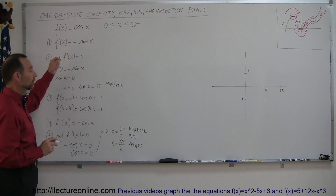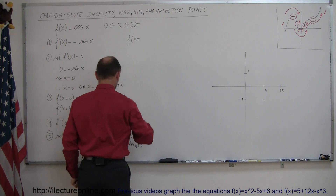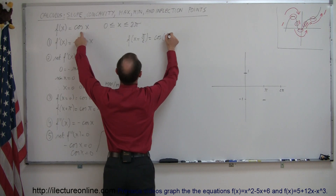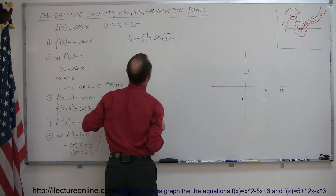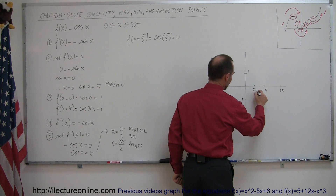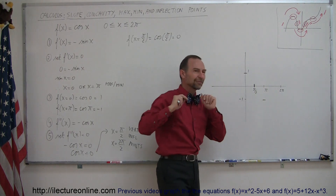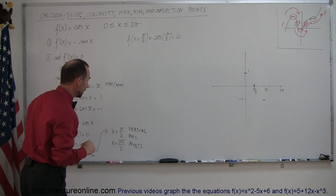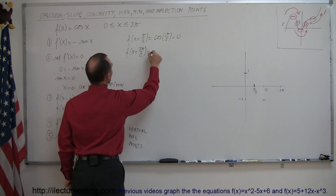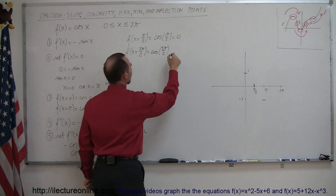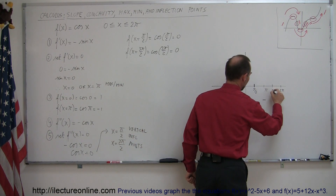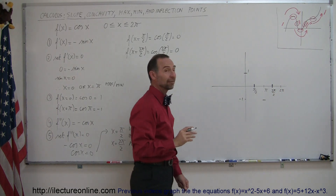To find where those inflection points are, we plug the values back into the original equation. f(π/2) equals the cosine of π/2, which is 0. So when x equals π/2, y equals 0 — there we have a vertical inflection point. Similarly, f(3π/2) equals the cosine of 3π/2, which is 270 degrees, and that also gives us 0. So when x equals 3π/2, y equals 0. Now we have four critical points in total.